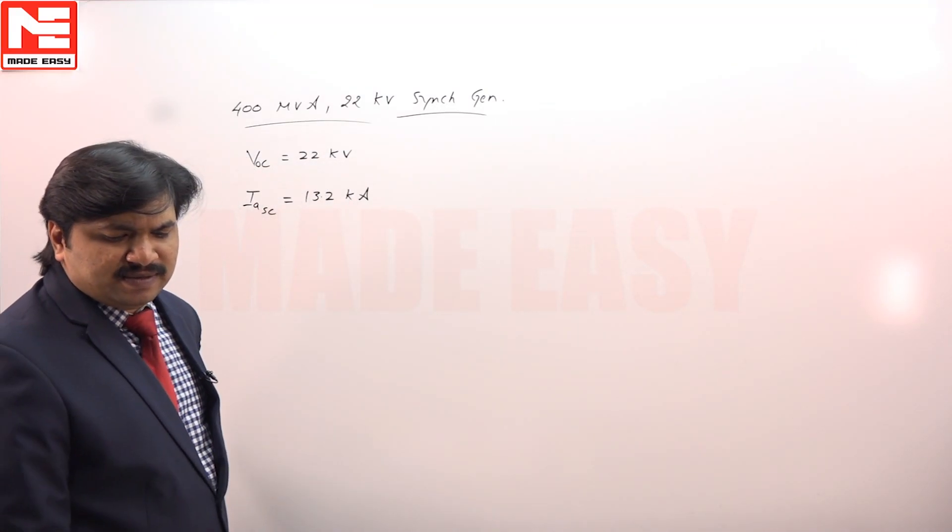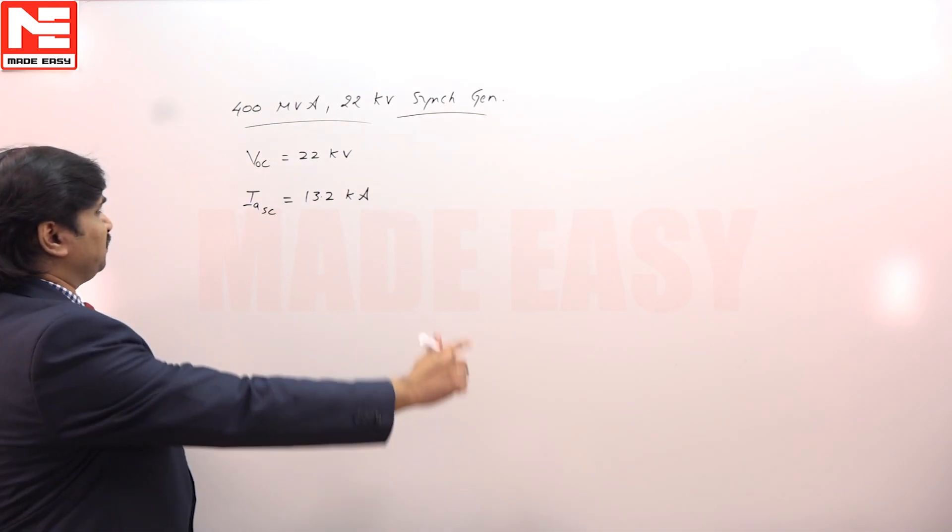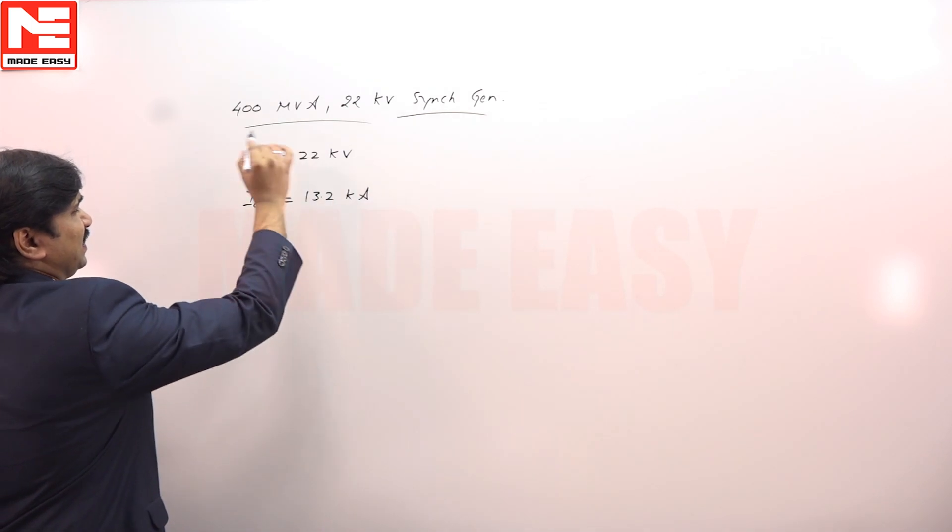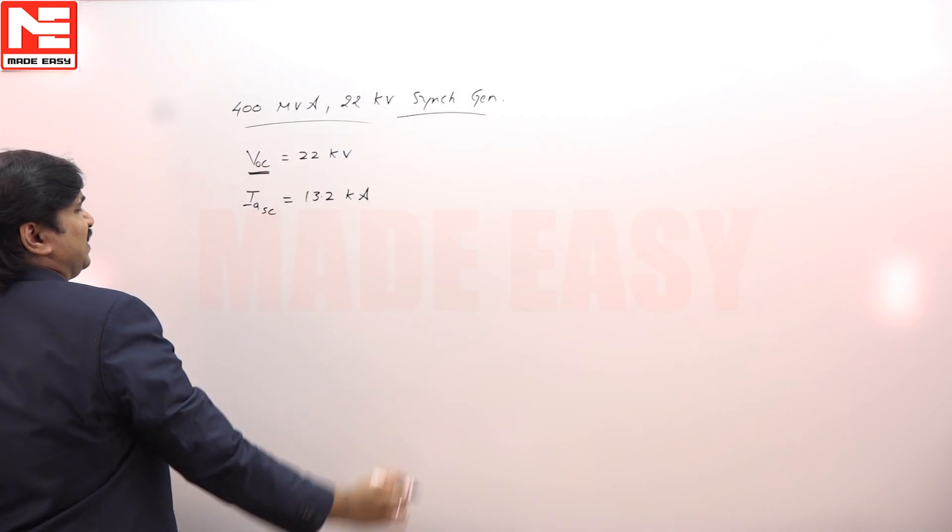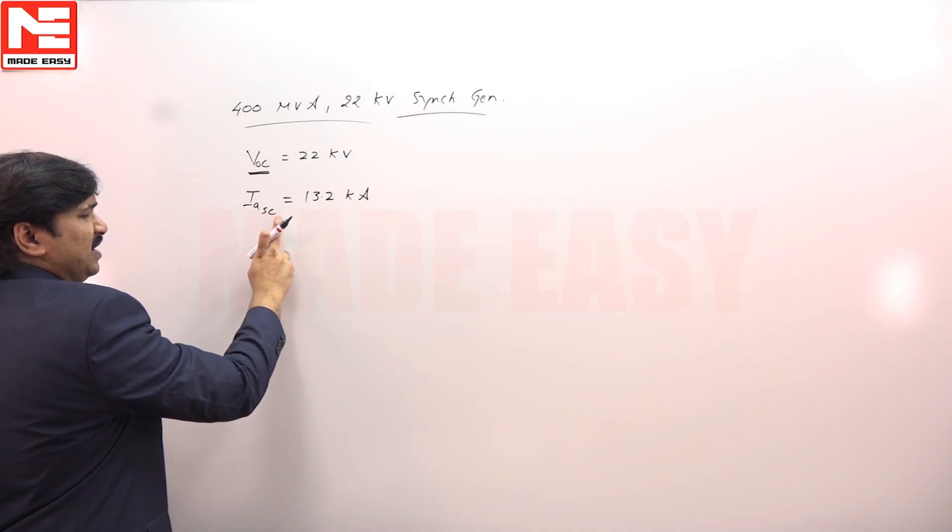This question contains a synchronous generator operating at 22 kV. It was given the rated voltage 22 kV. The current is 13.2 kilo amperes.